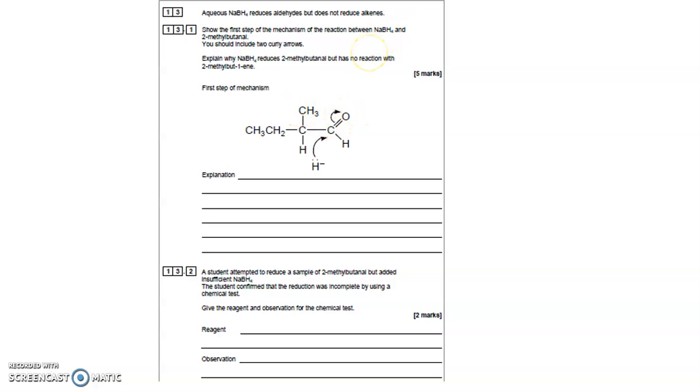So whereas now it's attacking a C-delta-plus, a little delta-plus on the polar carbon-to-oxygen double bond, it won't attack an electron-rich, that's a carbon-to-carbon double bond, that's got lots of electrons because the H-minus ion is repelled by that.